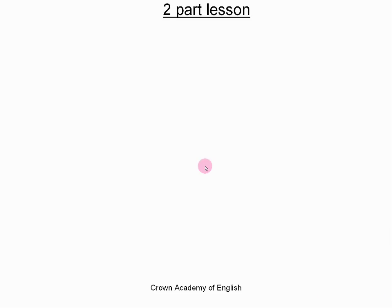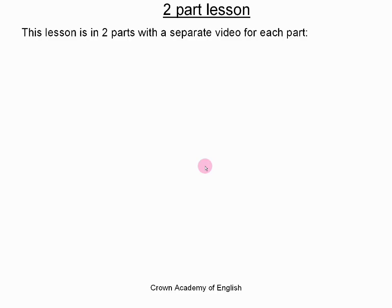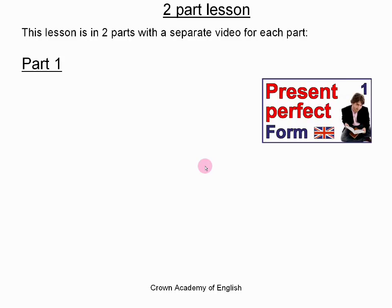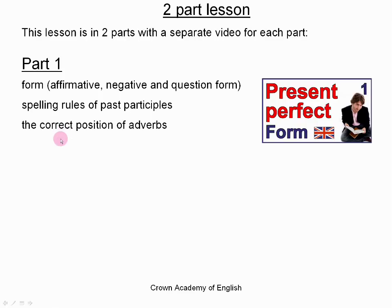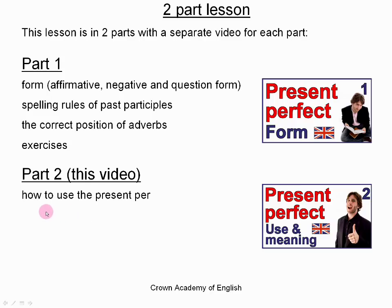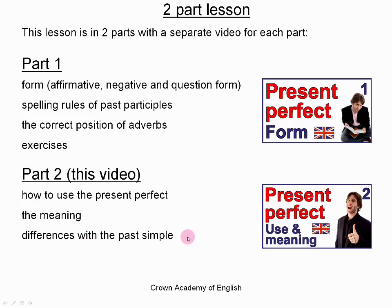This is a two-part lesson, with a separate video for each part. Part one I have already done — in part one I explain the form: the affirmative, negative and question form. I also give you the spelling rules of the past participles, and we look at the correct position of adverbs and some exercises. In this video, part two, we will look at how to use the present perfect and its meaning. And quite importantly at the end, we will look at the differences with the past simple tense, because this often causes confusion. So let's start.